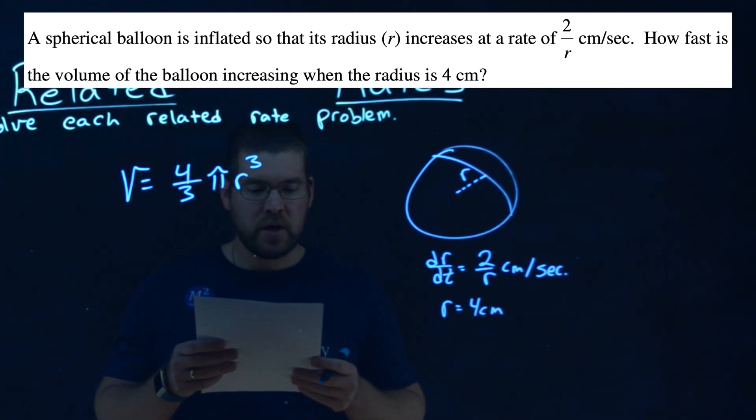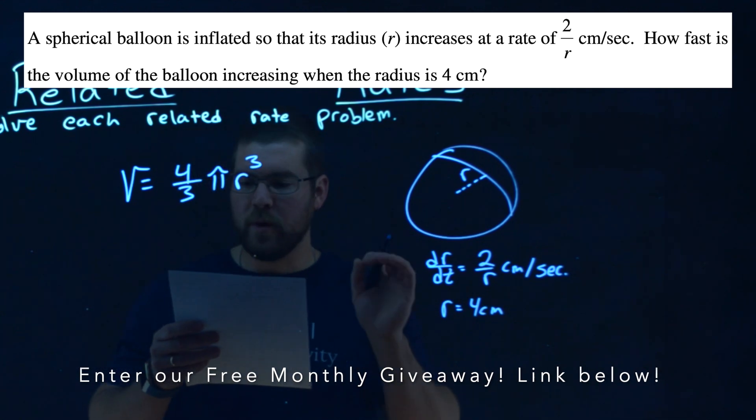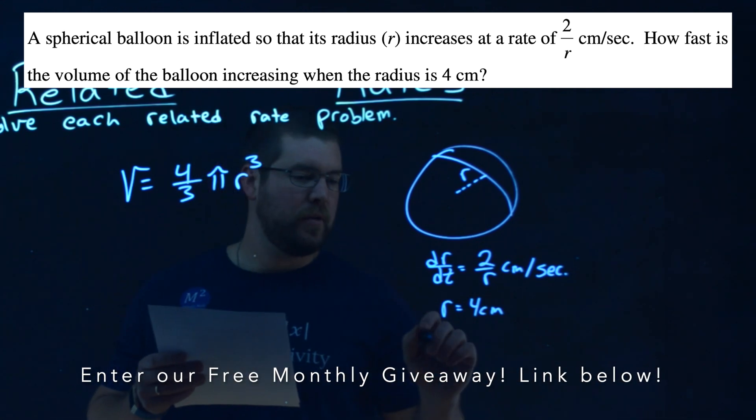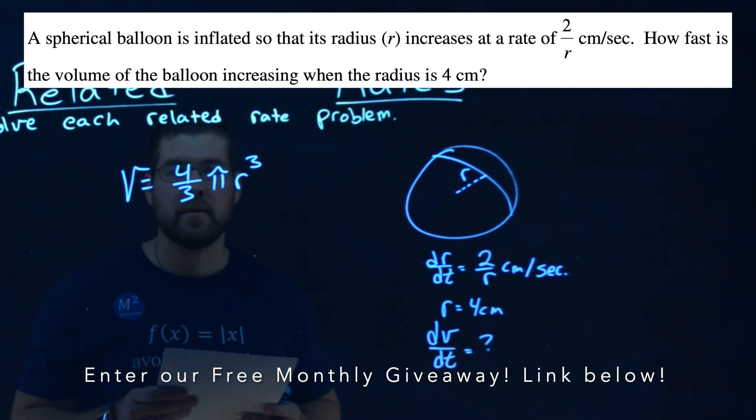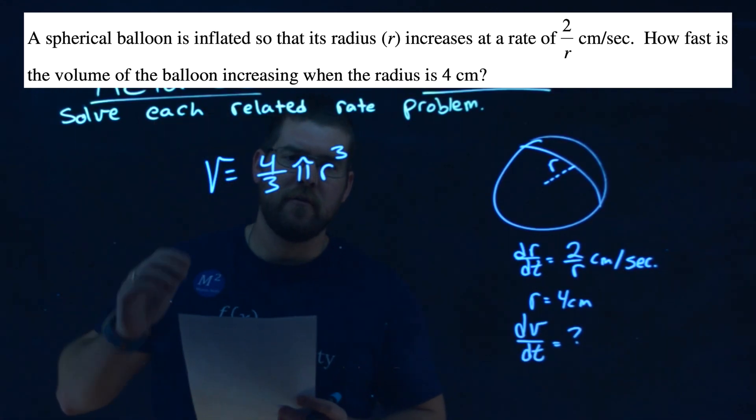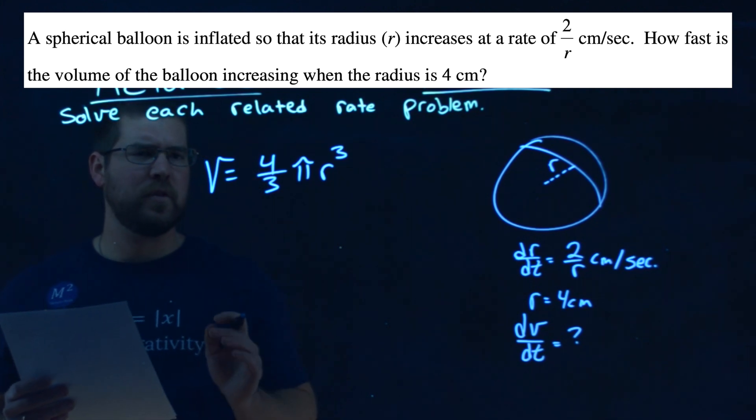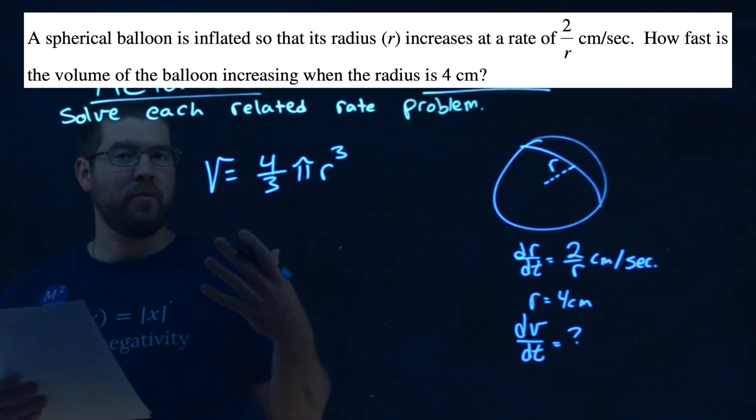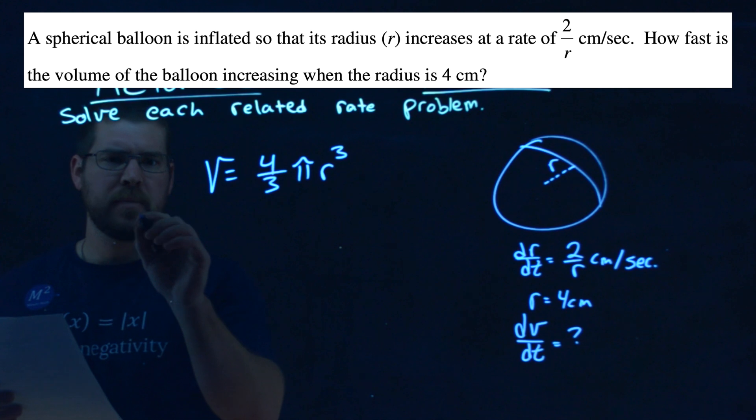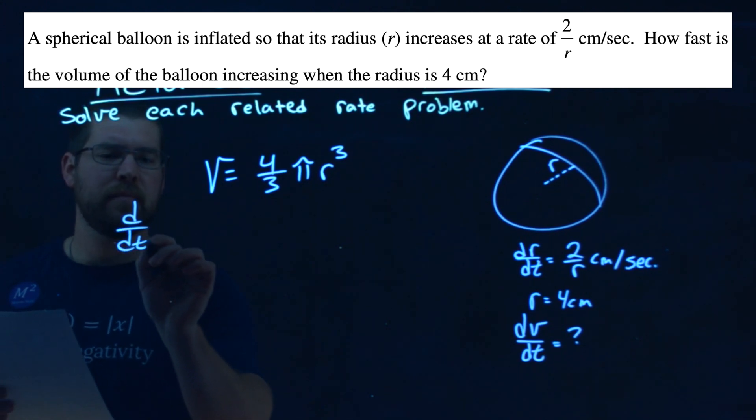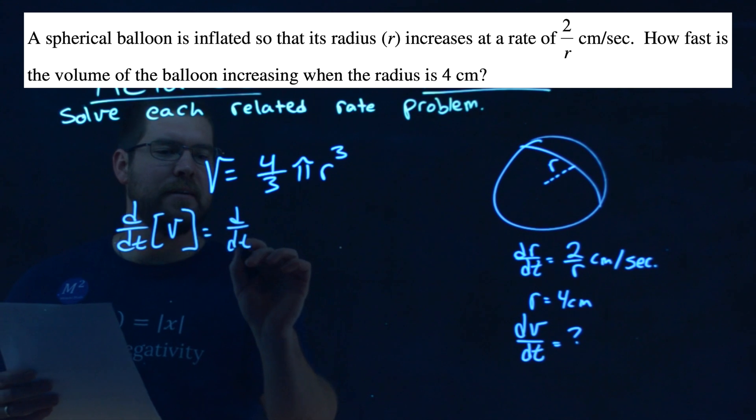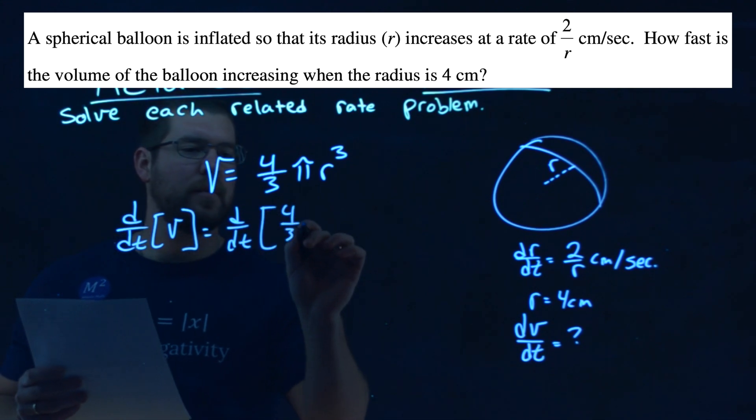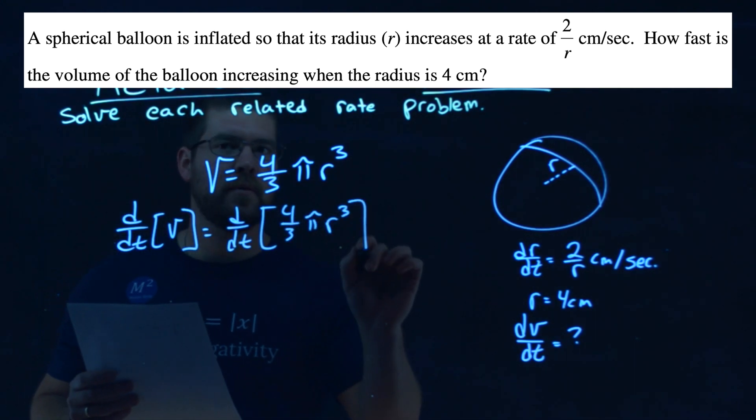And we want to find dv dt, the rate at which the volume of the balloon is increasing. So dv dt is what we're looking for. So I want to start with my formula right here for the volume of a sphere. I'm going to derive this with respect to time. So we have d over dt of the volume is equal to d over dt of 4 thirds pi r cubed.